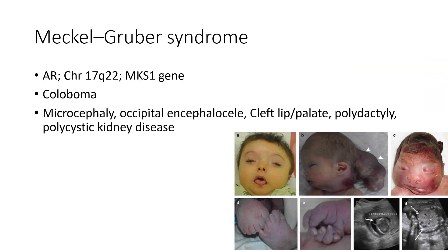Next is Meckel-Gruber syndrome. It is an autosomal recessive condition characterized by coloboma, microcephaly, occipital encephalocele, cleft lip or palate, polydactyly, and polycystic kidney disease.